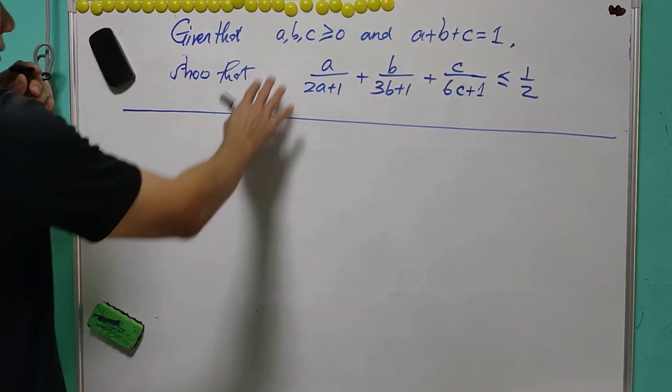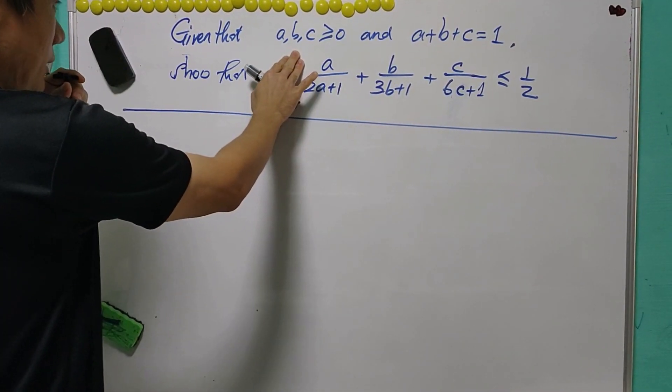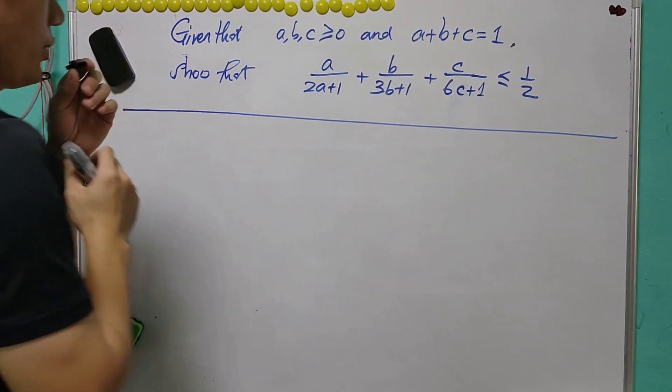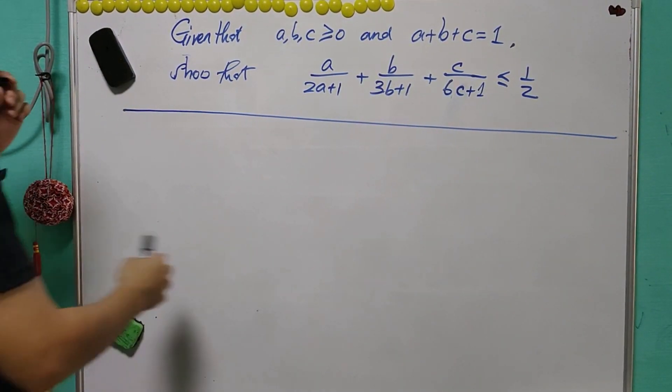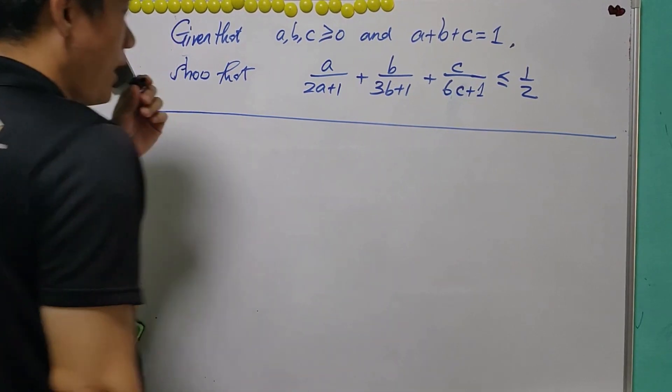This inequality question: we are given A, B, C are non-negative such that the sum is equal to 1. You are asked to show this expression is not more than half.